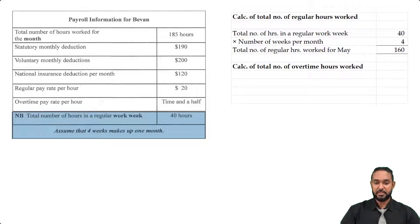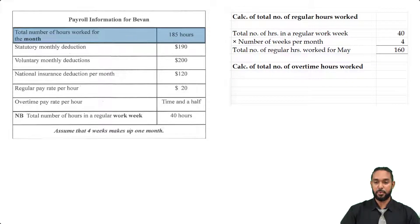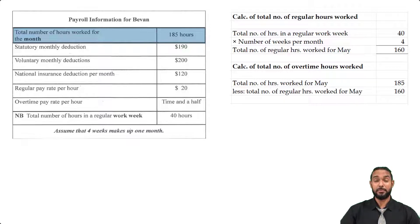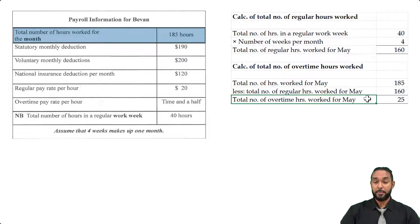The next thing they want us to calculate is the total number of overtime hours Bevan worked for the month of May. We take the total number of hours worked for the month, which is 185, and subtract the total number of regular hours, because overtime is the number of hours worked in excess of the regular hours. So 185 minus 160 gives us 25 overtime hours for the month.